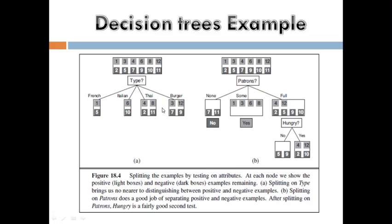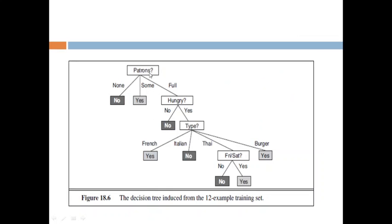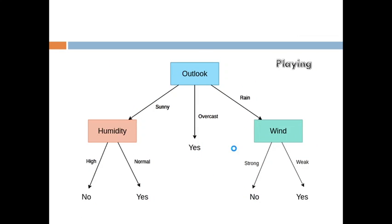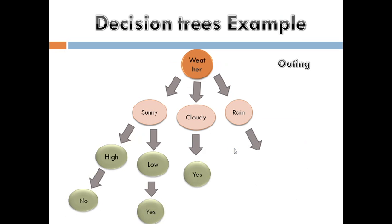After observing all this, this is the final decision tree. Patterns can be some or full. For full patterns, check if hungry — no or yes. Other conditions include type: French, Italian, Thai, or Burger, and whether it is Friday or Saturday — yes or no. Observe all these three examples and you will understand decision trees. Thank you.